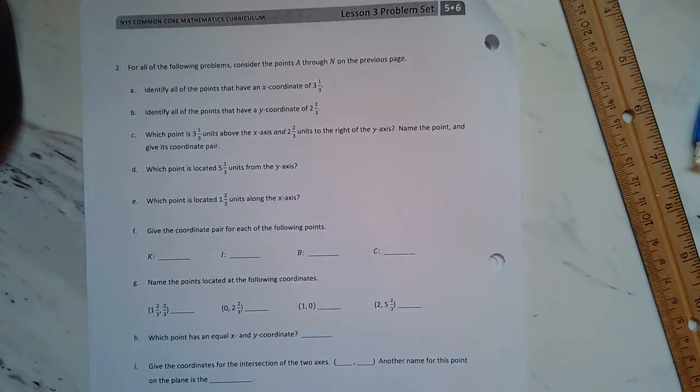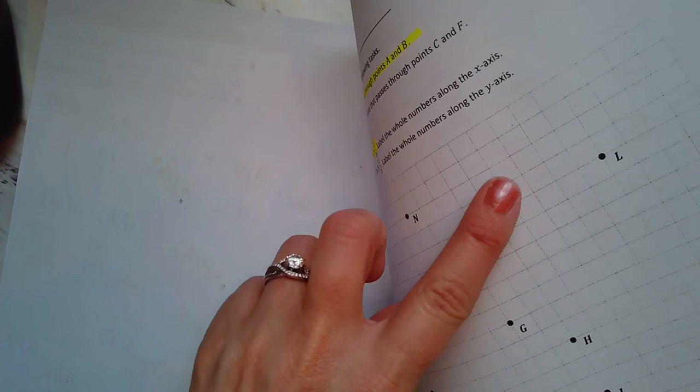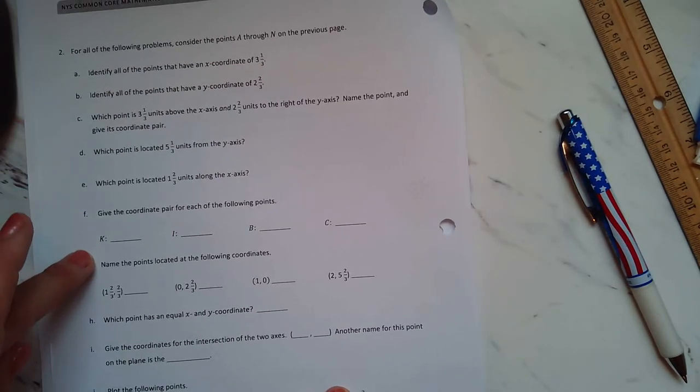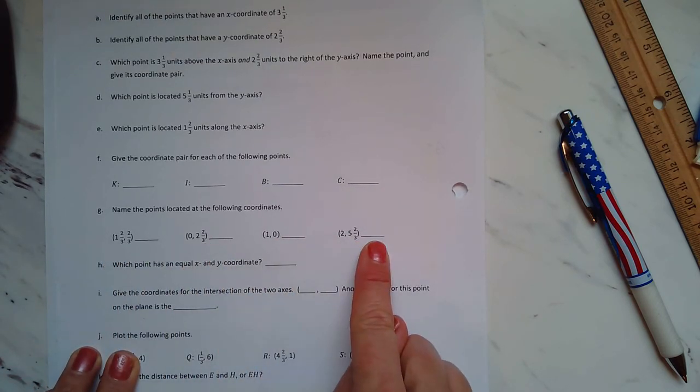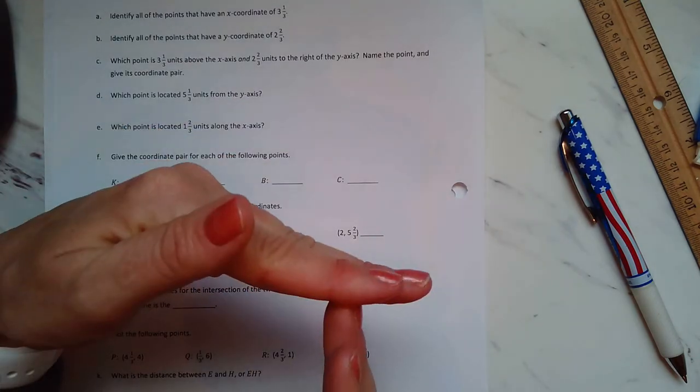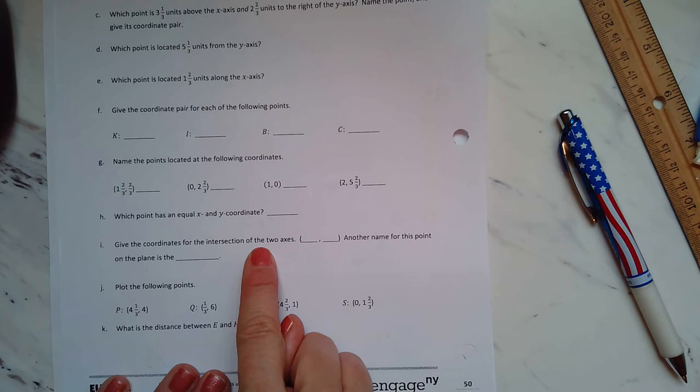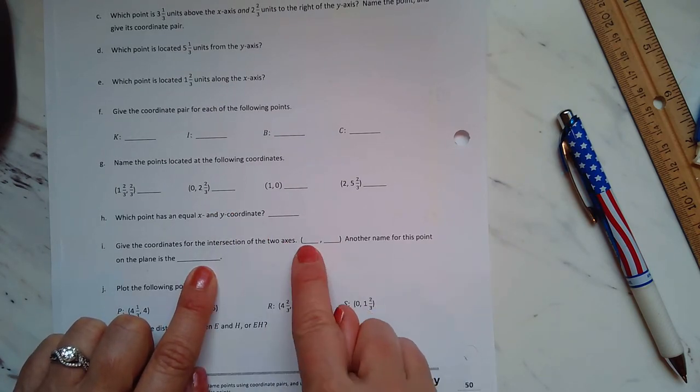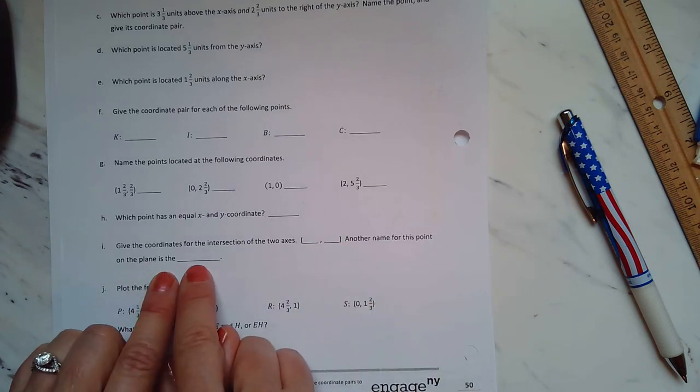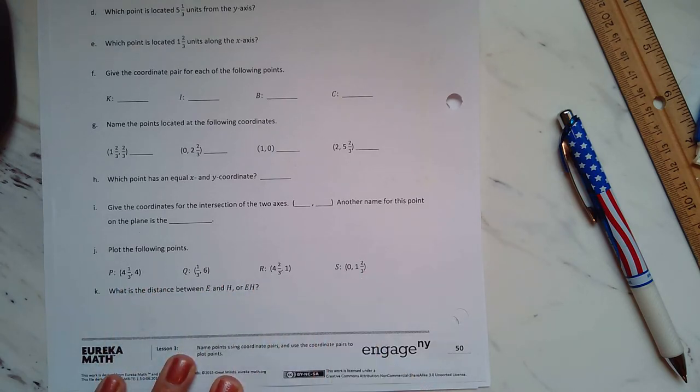Then, for problem 2, for all the following problems, consider the points A through N on the previous page. What you need to do is you're going to identify - first, you have to fill in your coordinate grid. Then, you can identify all the points on the grid, and that takes you all the way through here. Then, you're going to name the points that are located here. Which point has an equal x and y coordinate, so equal. The x and the y are equal. Give the coordinates of the intersection of the two axes. Another name for this point on the plane is called the what. You're going to identify the point, the letter. Then, here, you're going to plot these coordinate pairs, and label those points on the grid.